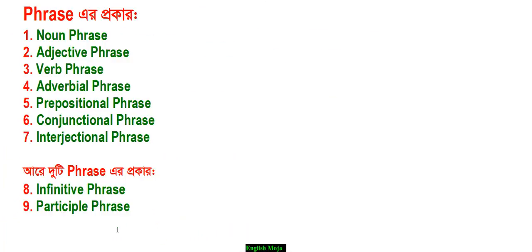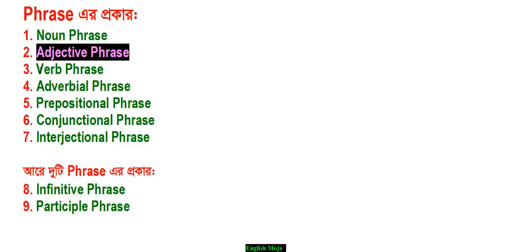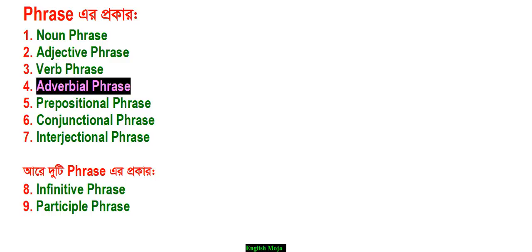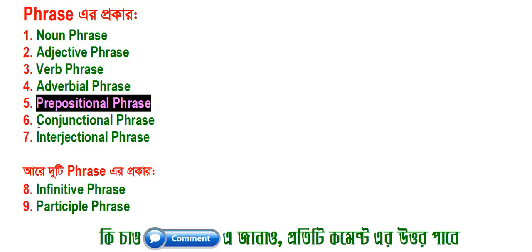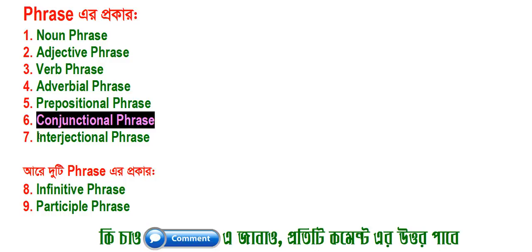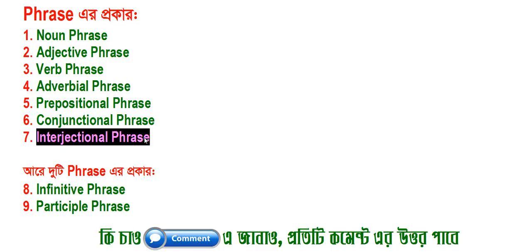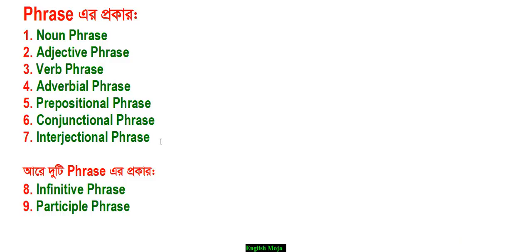The first question is: what is the phrase and in which way? Number one is noun phrase. Number two is adjective phrase. Number three is verbal phrase. Number four is adverbial phrase. Number five is prepositional phrase. Number six is conjunction phrase. Number seven is interjection phrase. The word as an interjection phrase — this is the phrase.